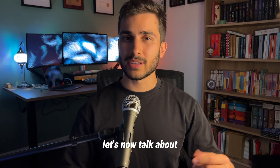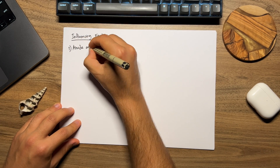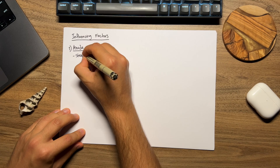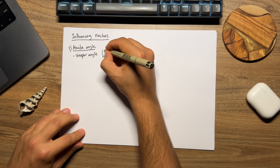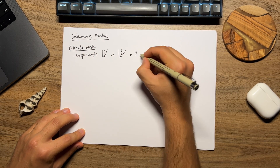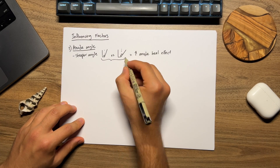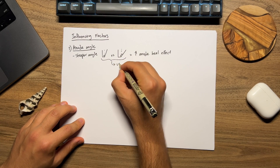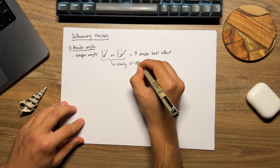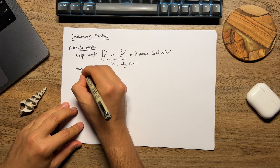Let's talk about the different factors that influence the anode heel effect. The first is the anode angle. The steeper the anode angle, the more pronounced the heel effect. Now this isn't something we can really change — it's set by the manufacturer. They really need to make sure it's an ideal angle, and they usually have it between 12 to 15 degrees, which is probably a lot less than you thought.